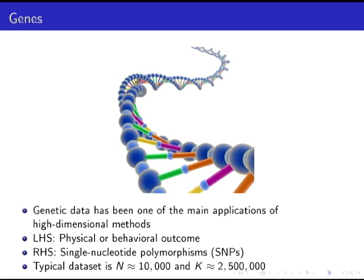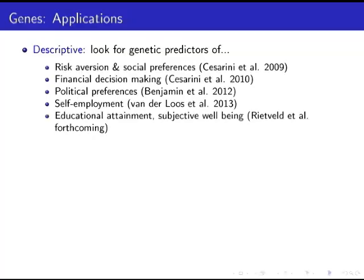The second kind of data Matt talked about is genetic data. This is one of the main places where high-dimensional methods have been developed and applied. The left-hand side is some physical or behavioral outcome; the right-hand side is all these SNPs. The data set has N equals 10,000 and P on the order of 2.5 million — a case where you have more variables than observations.